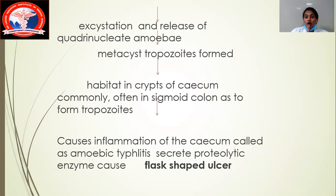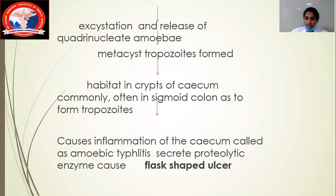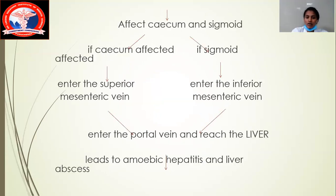After forming their trophozoites, there is multiplication, and the area becomes inflamed. The cecum starts getting inflamed, and this condition is called amoebic typhlitis — 'itis' meaning inflammation. The organism secretes a proteolytic enzyme which causes flask-shaped ulcers. For your MCQ: the inflammation of the cecum is called amoebic typhlitis, and flask-shaped ulcers are caused by Entamoeba histolytica.